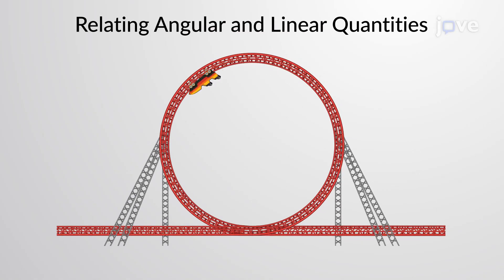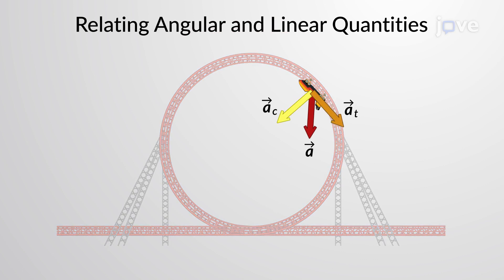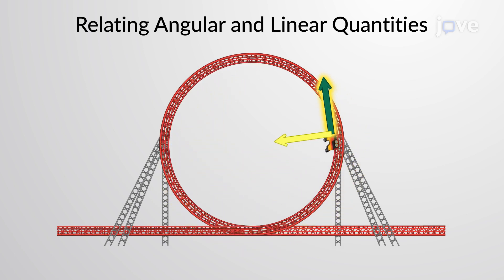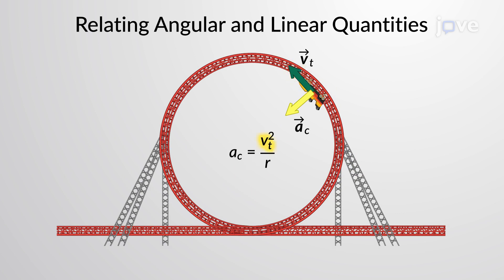When an object is moving in a non-uniform circular motion, the linear acceleration is represented as a centripetal and tangential component. The centripetal or the radial component is associated with a change in the direction of velocity, expressed in terms of velocity and radius of the circle. Replacing velocity by...